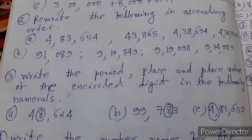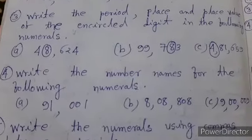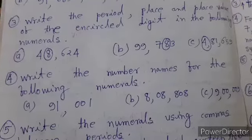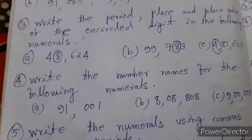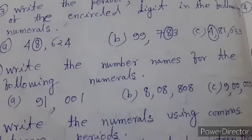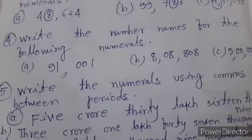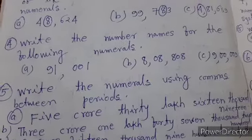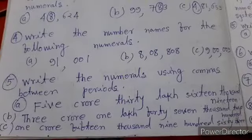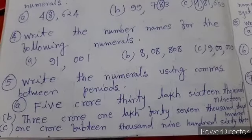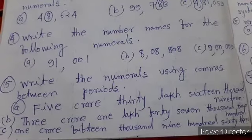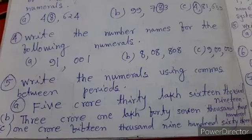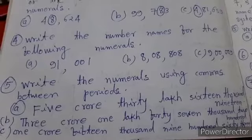Question 4: Write the number names for the following numerals: 91,001, 8,08,808, and 9,00,000. Question 5: Write the numerals using commas between periods: A: 5 crore 30,16,019, B: 3 crore 1,47,200, C: 1 crore 15,963.